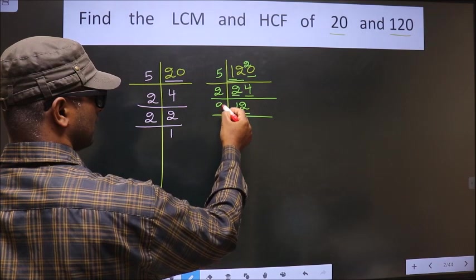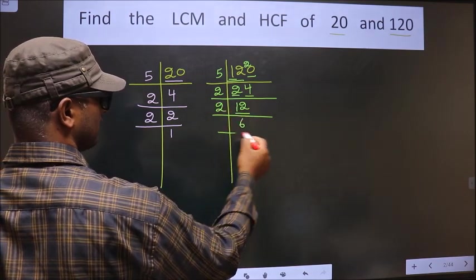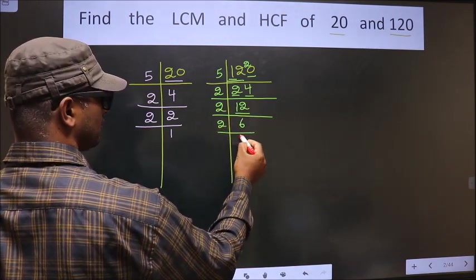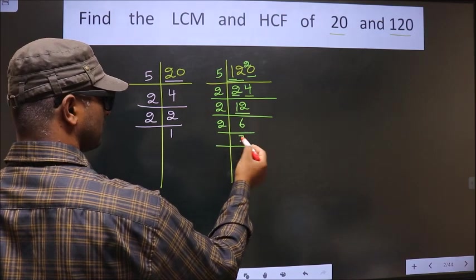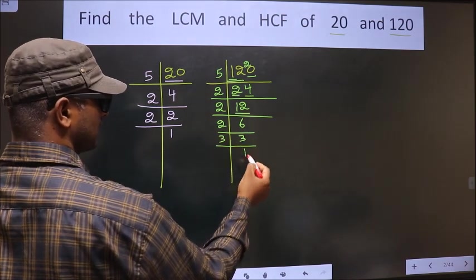Now here we have 12. 12 is 2 times 6. Now 6 is 2 times 3. Now 3 is a prime number so we take 3 times 1 is 3.